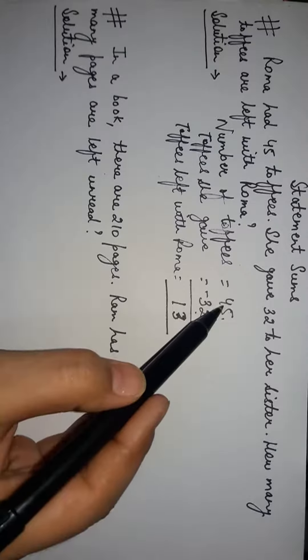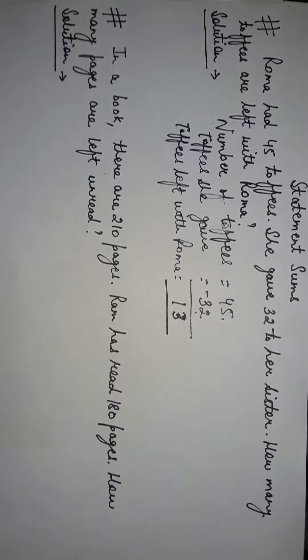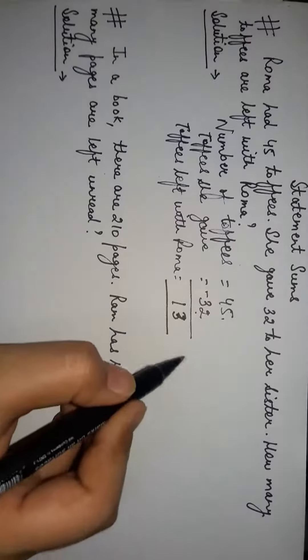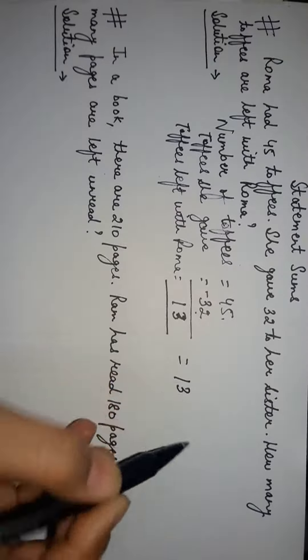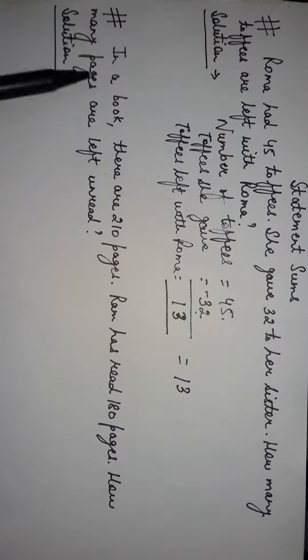5 minus 2 equals 3 and 4 minus 3 equals 1. So Roma is left with 13 toffees. Let's take one more example.